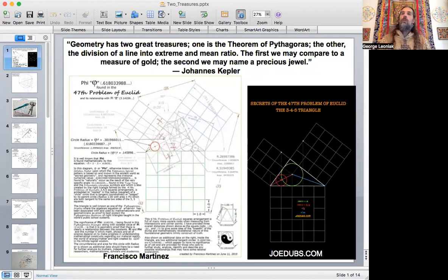And here's the quote that I just mentioned: Geometry has two great treasures. One is the theorem of Pythagoras. The other, the division of a line into extreme and mean ratio. The first we may compare to a measure of gold. The second we may name a precious jewel. Johannes Kepler.